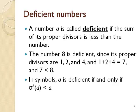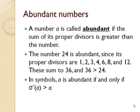On the other hand, a number is abundant if the sum of proper divisors is greater than the number. So 24 is an abundant number. The sum of the proper divisors of 24 is 36, which is greater than 24. And so we say a number A is abundant if and only if sigma star of A is greater than A.